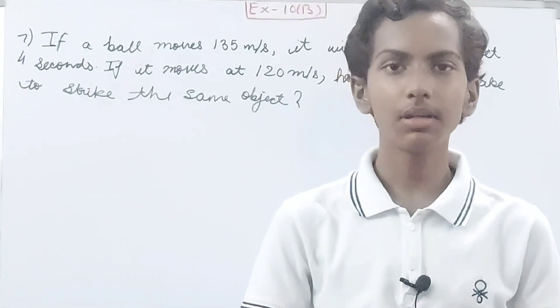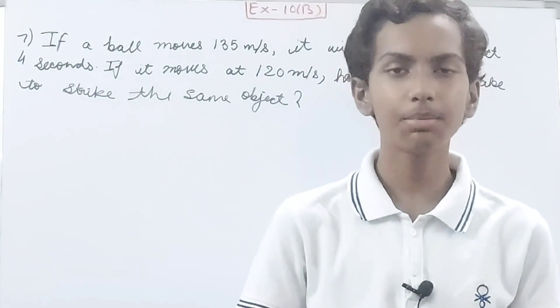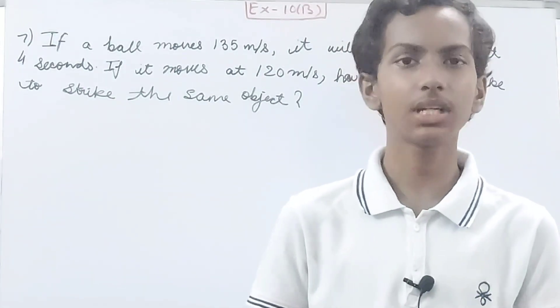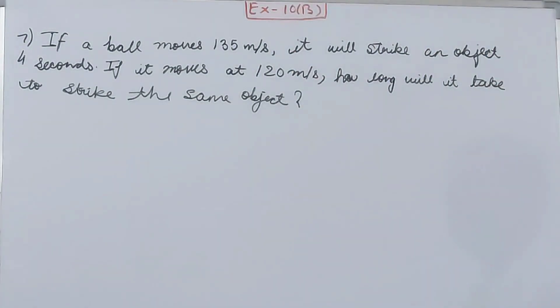Hello friends, welcome back to my YouTube channel and local learning. In this video we are going to solve ICC Mathematics Class 8, Chapter 10 Direct Inverse Variation, Exercise 10B, question number 7. If a ball moves at 135 meters per second, it will strike an object in 4 seconds. If it moves at 120 meters per second, how long will it take to strike the same object?